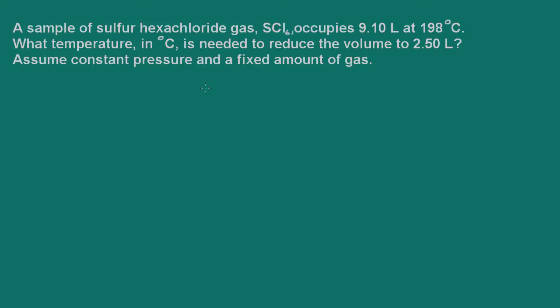So we have a sample of sulfur hexachloride gas that occupies 9.1 liters at 198 degrees Celsius. What temperature in Celsius is needed to reduce the volume to 2.5 liters? We're going to assume constant pressure and a fixed amount of gas.